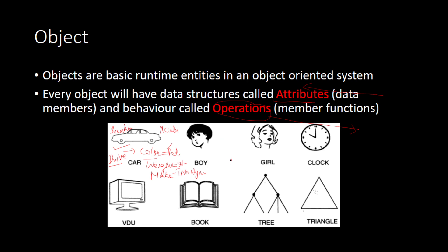Let's take the problem of writing software for a library. When you want to manage a library, you have to consider all the objects that surround it. One of those objects is a book — a book is an object present inside the library. Apart from that, we can have racks as another object. When we speak about a book, it has different attributes.